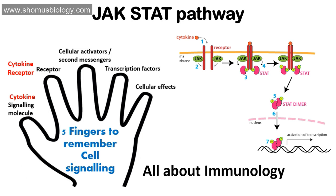The third important parameter of the JAK-STAT pathway is the cellular activators, which are JAK and STAT. As you can see in this picture, once cytokine binds with the receptor, the receptor gets dimerized and phosphorylates JAK. Once JAK gets phosphorylated, JAK also phosphorylates the cytosolic domain of the cytokine receptor. That's the cellular activation process — quite simple compared to other signaling pathways.